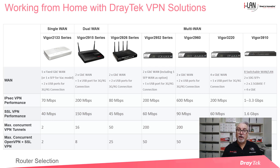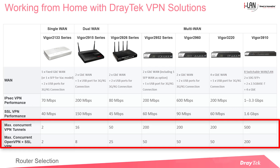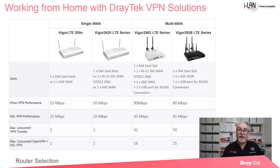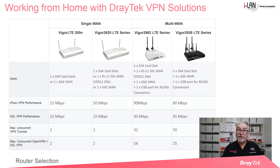You can plug in a VDSL modem like the Vigor130 in bridging mode into one of their Ethernet WAN ports – useful where you need the features of a router like the Vigor3910 but have a VDSL connection. Most models also feature at least one USB port to connect a compatible 3G or 4G USB modem. The bottom two rows of the table show the number of simultaneous VPNs supported, giving an idea of the office size they're designed for.